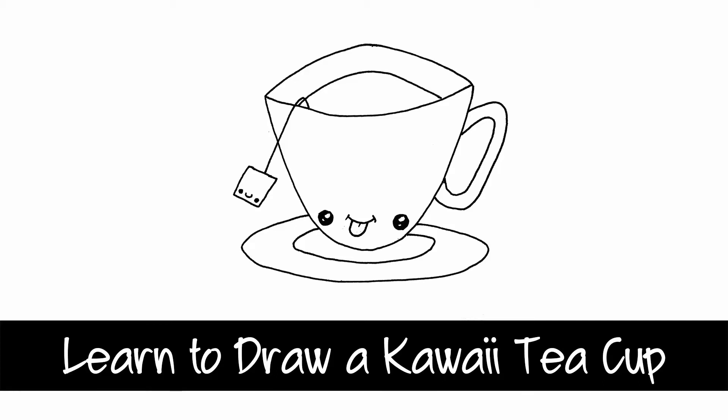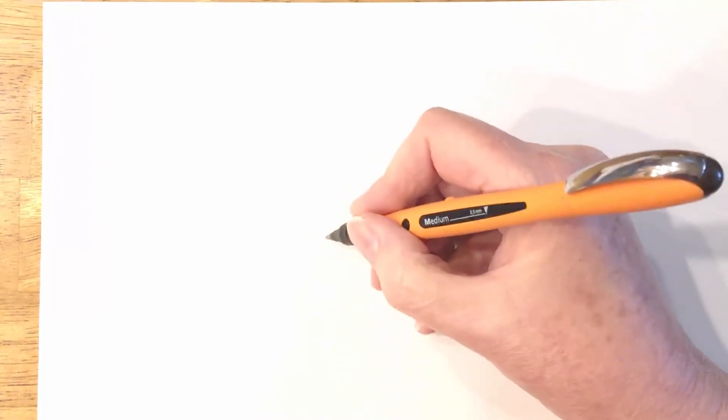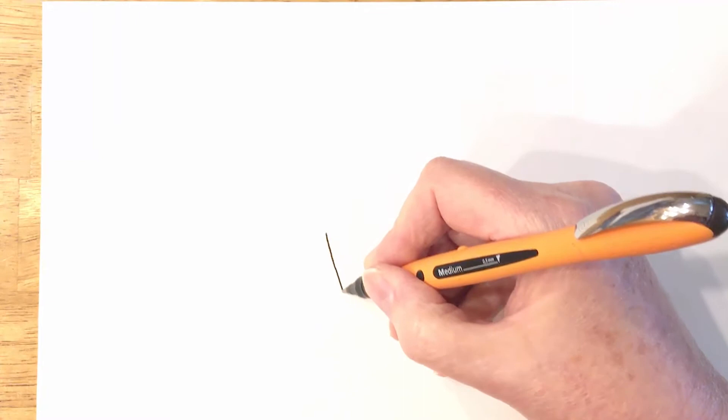Hello and welcome to this video tutorial. Today we're going to draw a kawaii teacup with a little tea bag in it. We're going to start with the cup shape, which is sort of almost a half circle but a bit more pointy on the bottom.